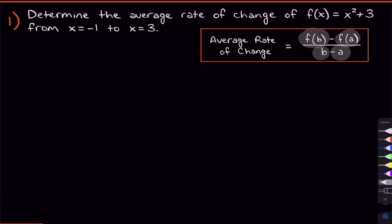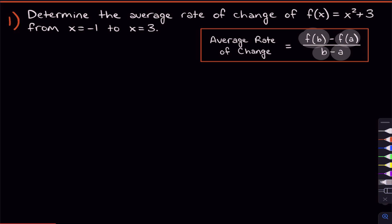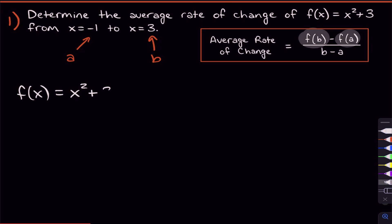Let's start off by talking about b and a. a and b are our interval — those are the x values we're given in the problem. The first x value is a, and the second x value is b. Now we have the first two pieces of the formula. We just need to figure out what f(a) and f(b) are, using our function f(x), which is x squared plus three.